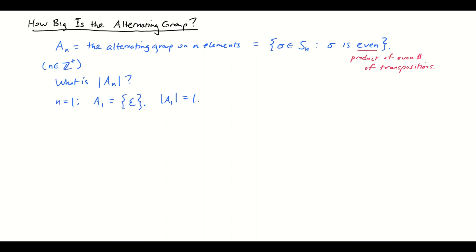But after that, things get a little bit more interesting. So let's assume that n is greater than 1. Thinking about this: how many even permutations are there? And we might as well also ask, how many odd permutations are there? You might guess that even and odd, being sort of dual to each other, they're the same size of set — that is, there are as many even permutations as there are odd permutations. And that would be a correct guess. That is what we're going to prove: exactly as many even permutations as odd ones.